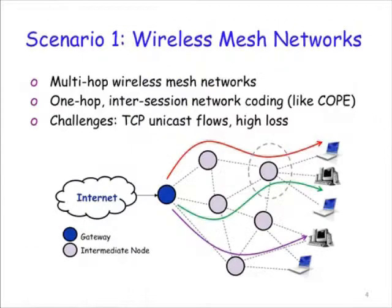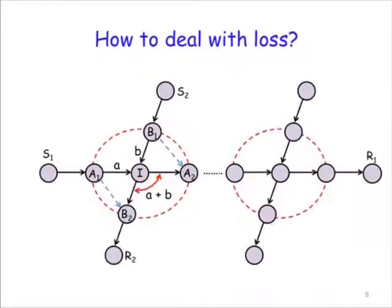Let me start with the first scenario. Wireless mesh networks is a setting where network coding has been shown to bring significant performance benefit. For example, the scheme developed in COPE is one-hop intersection opportunistic network coding and was shown to be both implementable and bring high throughput improvements. The challenges that still remain in this setting are the high loss rate that may exist in this environment and the behavior of TCP unicast flows. In this work, we ask the question of how we can deal with loss in COPE-like networks.